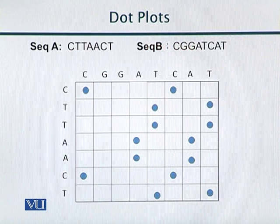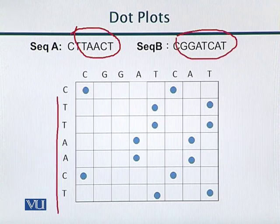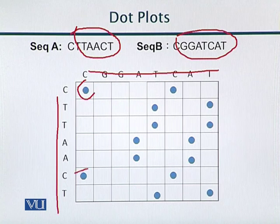Graphically it looks like something shown in this figure. We have two sequences, sequence A and sequence B. Sequence A is shown on one side and sequence B on the other. Starting from C, which is the first character — both sequences have this C in common. We can find where these sequences are similar to each other and simply put a dot at those positions in the figure.